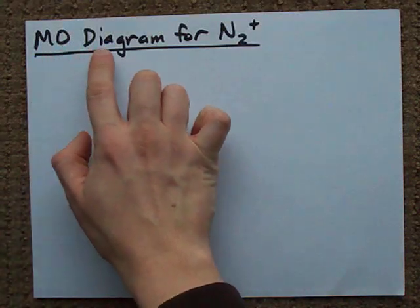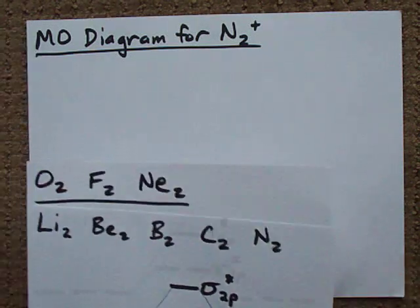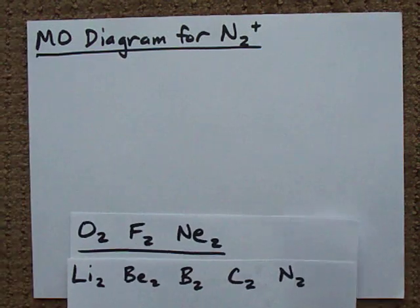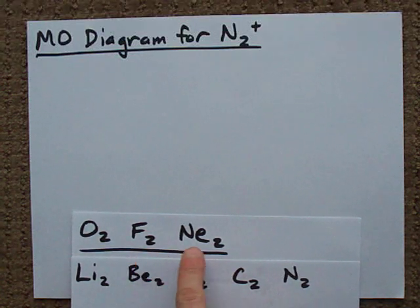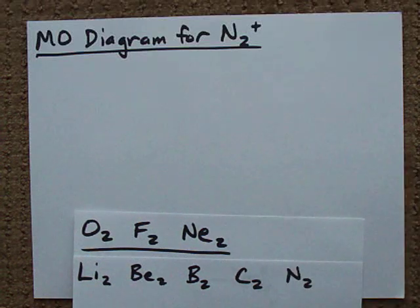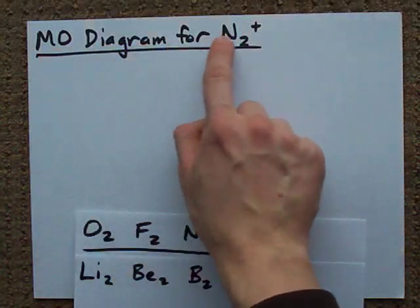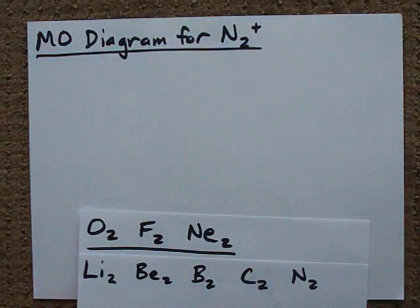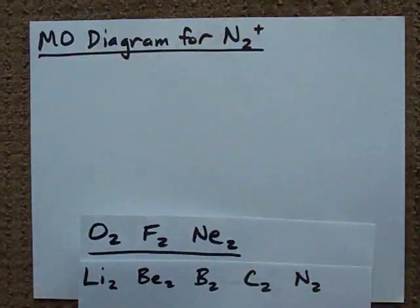You need the MO diagram for N2+. Now they could have asked you for the MO diagram for any of these diatoms: Li2, Be2, F2, Ne2. These are just the way they teach you MO diagrams. Now here's the first thing you gotta remember: when you're asked for the MO diagram of a diatom like that, there are two different MO diagrams you basically have to memorize.